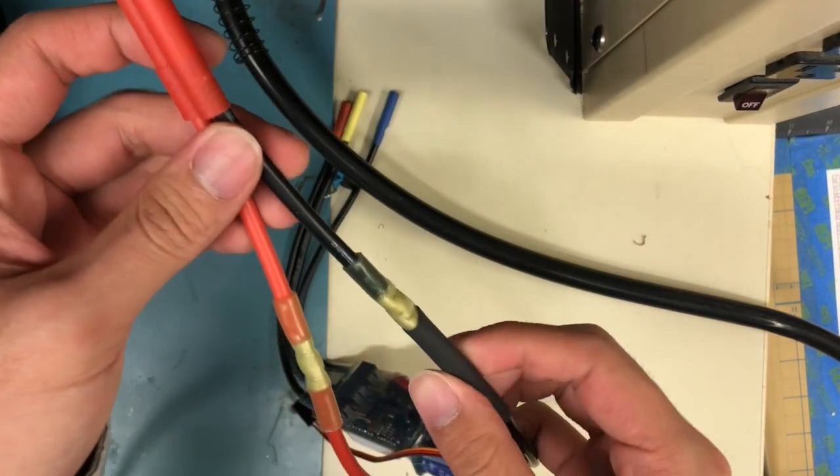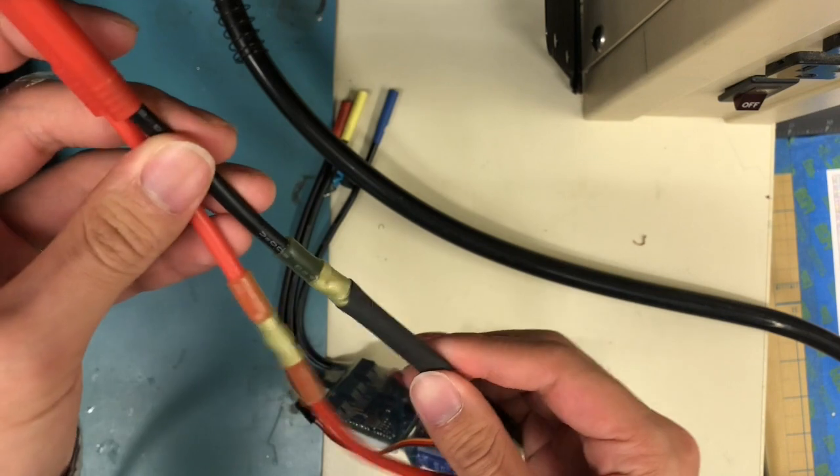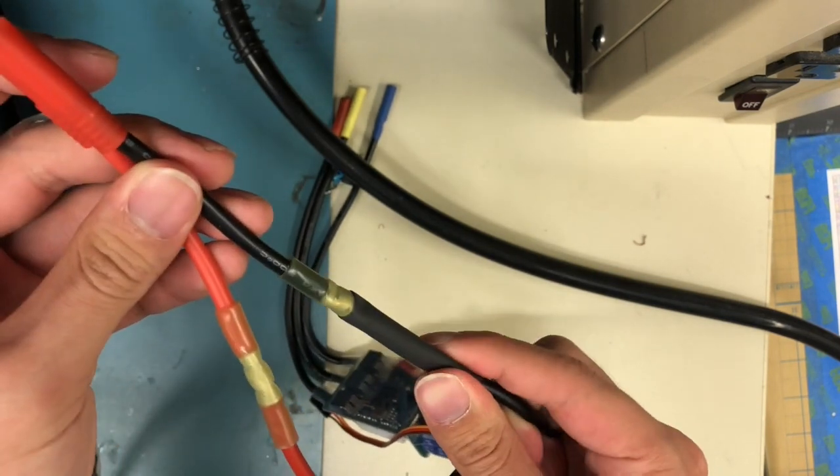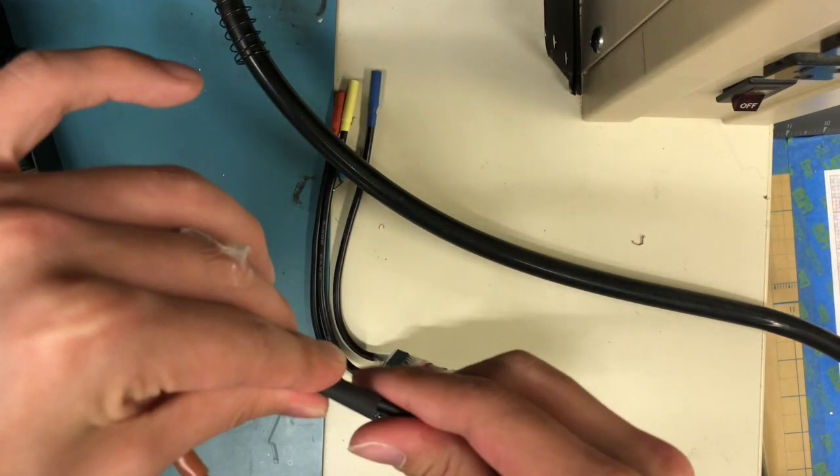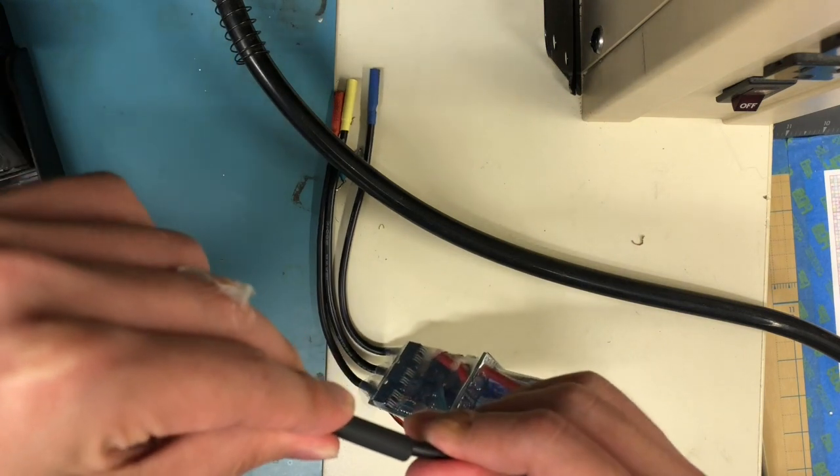Once the connector has cooled down, slip up the quarter inch black heat shrink until it completely covers the solderless heat shrinks.